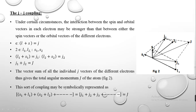In the diagram, S1 and L1 give rise to J1, and S2 and L2 give rise to J2. J1 and J2 then give rise to the resultant J. This is all about JJ coupling.